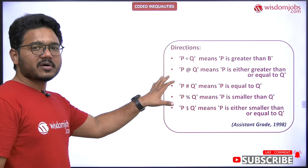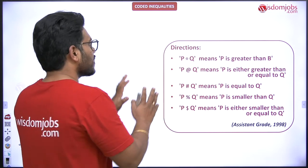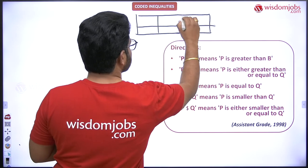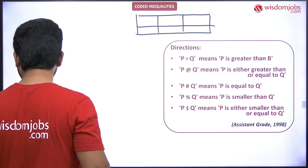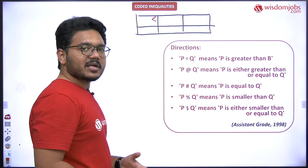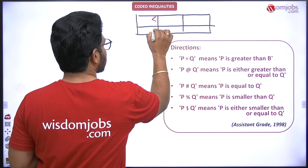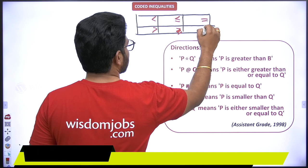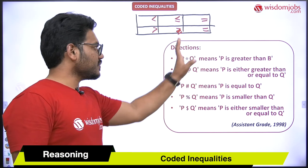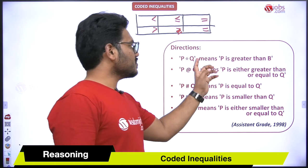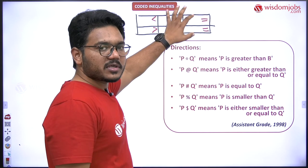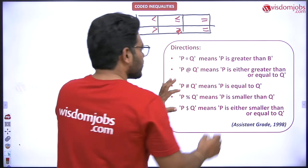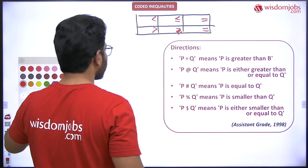Let me draw the box related to this. The basic symbols in that box — as described in our basic video — are: lesser than, greater than, lesser than or equal to, greater than or equal to, and equal to. We need to place the corresponding coded symbols into the box, and using that box we will solve the questions.